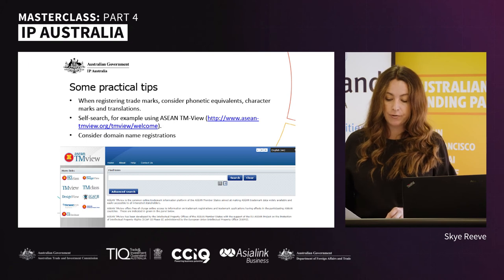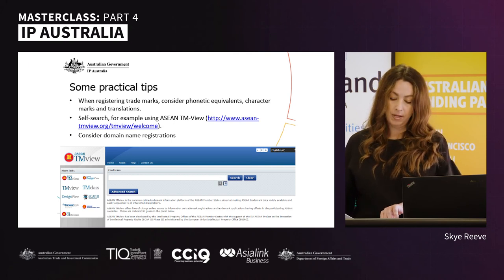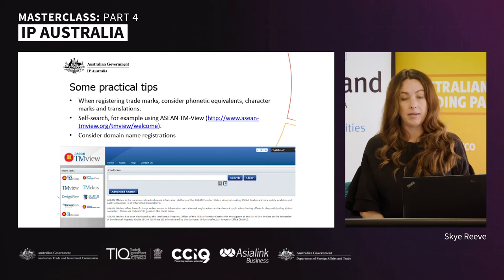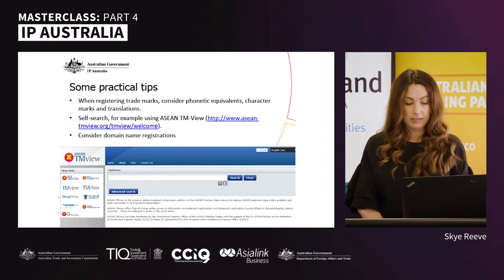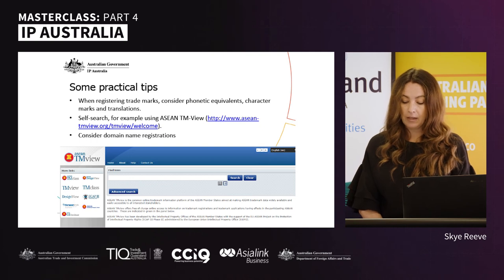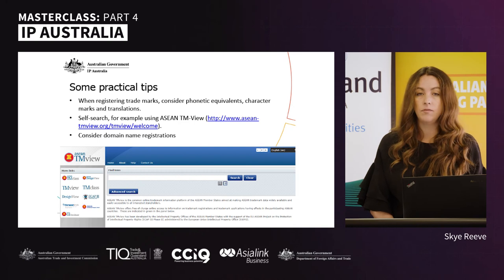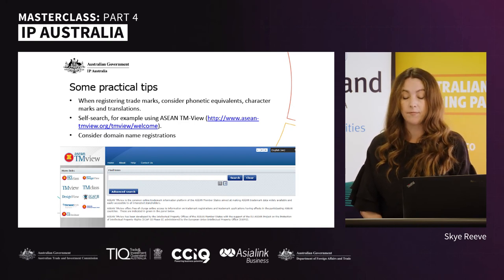For trademarks, think about registering your trademark in English as well as the language of where you're applying — this may include characters and phonetic equivalents. Consider searching existing databases for IP rights through IP Australia's website and in ASEAN countries. ASEAN TM View is useful for searching trademarks in the region. A self-search has its limitations but can give useful preliminary information, and your trademarks attorney can then conduct a professional search.